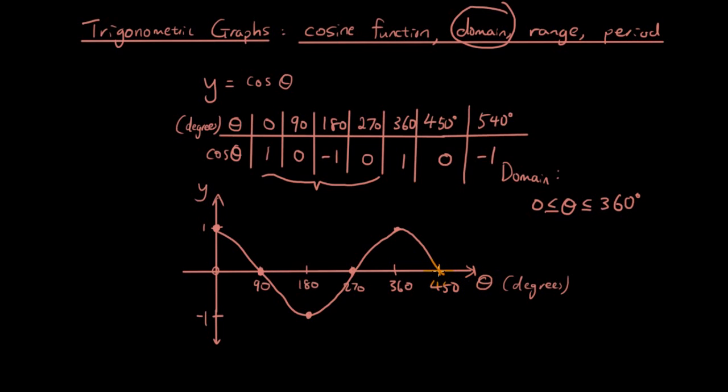and at 540 it'll go down to negative 1 again. It'll just keep repeating that pattern. So you can set the domain to whatever you want. Really, if you kept drawing this graph, the domain would be from negative infinity to positive infinity, or you can just say theta is an element of real numbers. That means it can be any real number you can think of, like 1,020 or something like that.